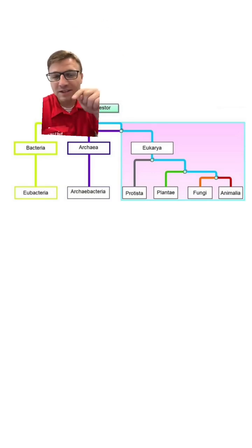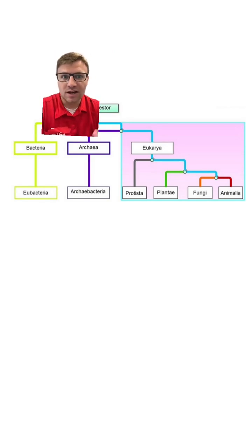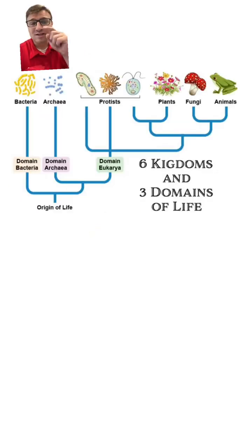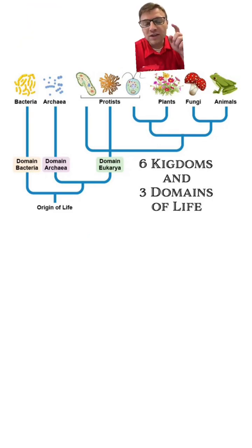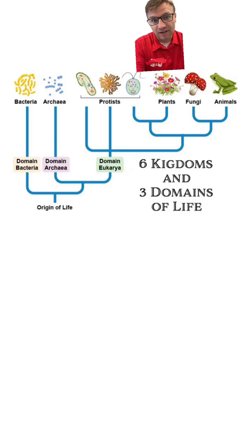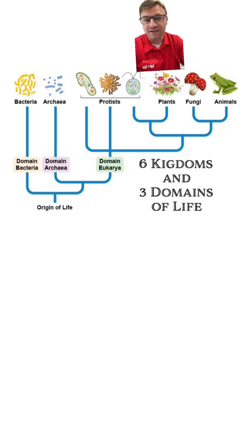You can see the common ancestor here that all three domains are related to, even though bacteria and archaea are both unicellular and prokaryotic. Here's another way of looking at it. You can see bacteria and archaea are both prokaryotic, while the eukarya domain is eukaryotic. However, remember protists can be unicellular, but most are going to be multicellular and very diverse.